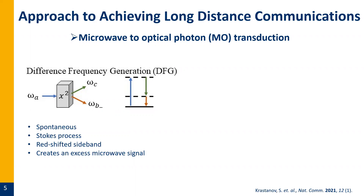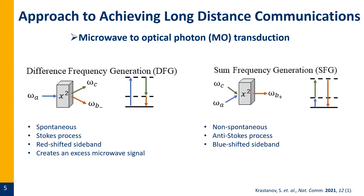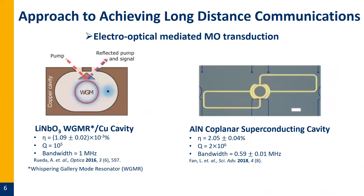One drawback is that the extra microwave signal translates as noise in the system and could dampen total photon conversion efficiency. There's another process in chi-squared materials called sum frequency generation, where the incoming signal and a tuned optical pump laser hit the material simultaneously. They combine and give a blue-shifted sideband, since this is an anti-Stokes process.